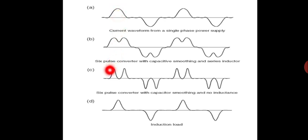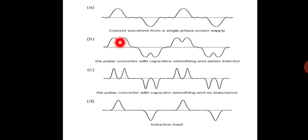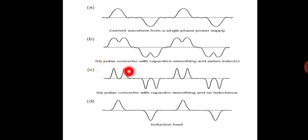For three phase, the distorted waveform will look like this, and for single phase, the distortion waveform will look like this. Also, for a single phase converter with capacitor smoothing and no inductor, the waveform will look like this. With both smoothing capacitor and inductor, the waveform will look like this. This is for the single phase inductive load.